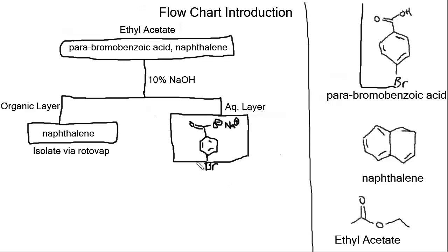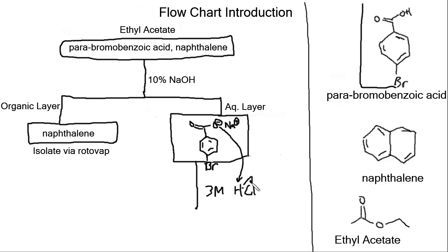We've now got our salt specified in our aqueous layer. After adding sodium hydroxide to make two layers and separating out the aqueous layer, we're going to add something like 3 molar HCl so that we can protonate our salt. Looking at the mechanism: we use our electrons, take that hydrogen, deprotonate the strong acid, and what we form again is parabromobenzoic acid.